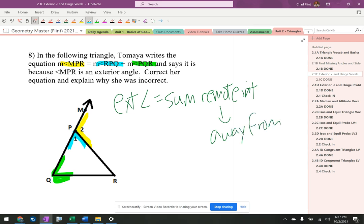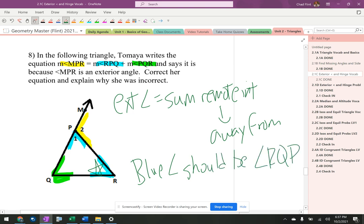So the blue angle should be over here, which is away from it. The blue angle should be ∠RQP.